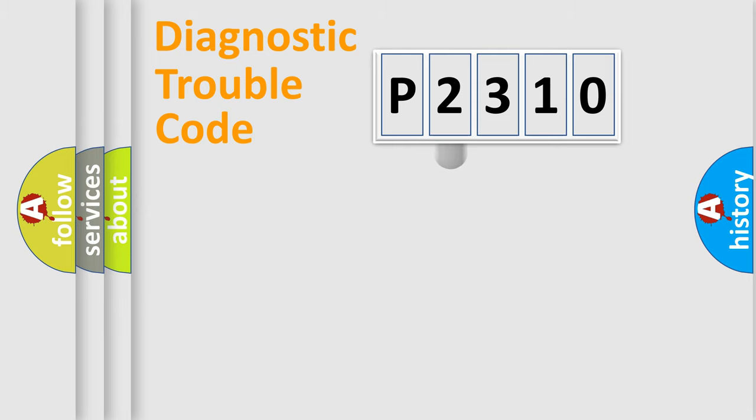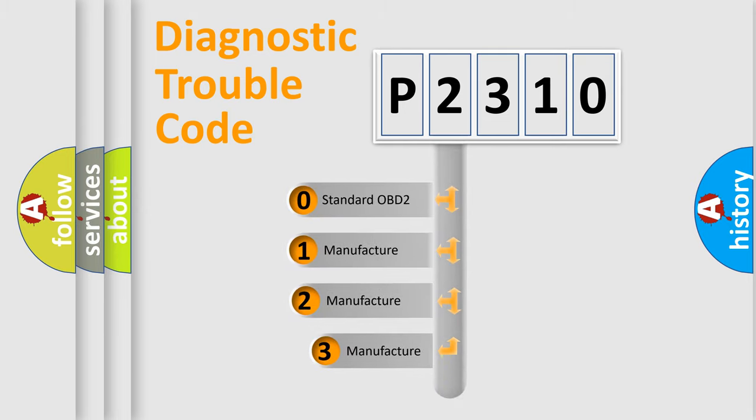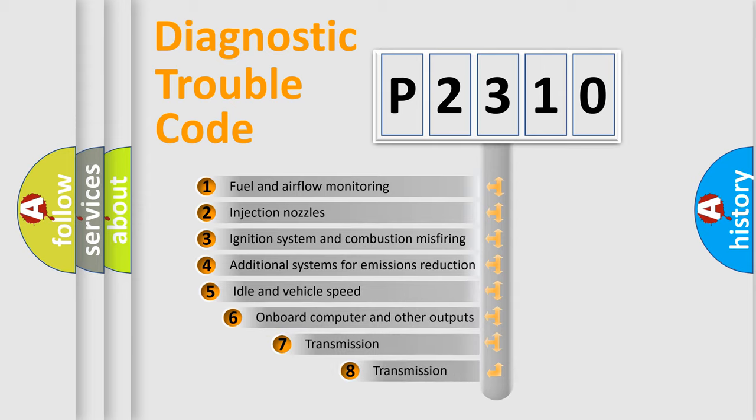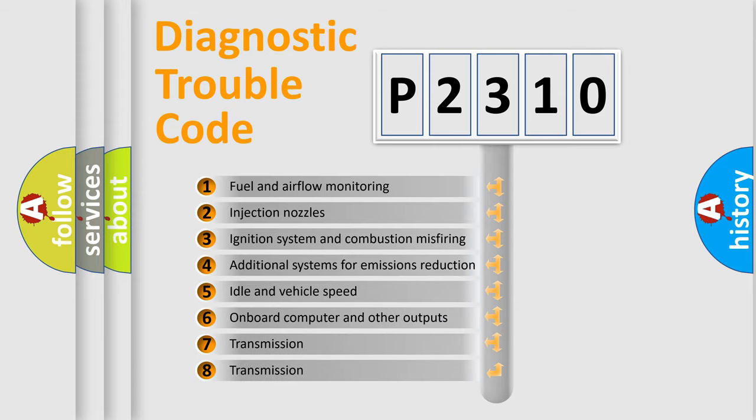This distribution is defined in the first character code. If the second character is expressed as zero, it is a standardized error. In the case of numbers 1, 2, or 3, it is a manufacturer-specific expression of the car-specific error. The third character specifies a subset of errors.